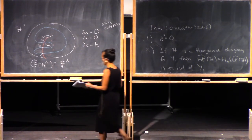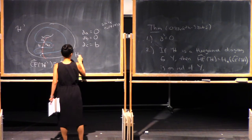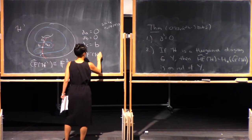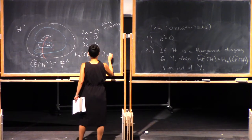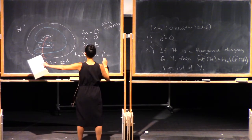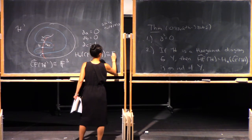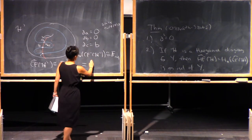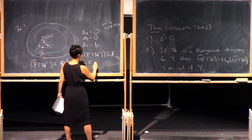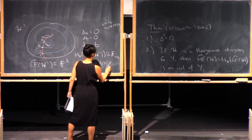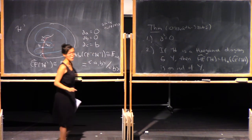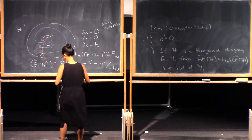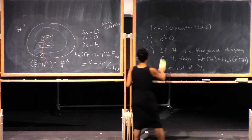So that's the boundary. If you compute the homology, it better agree with the calculation from before. And indeed it does: the kernel is generated by A and B, but B is in the image. So that's CF-hat.